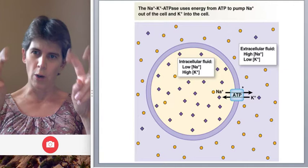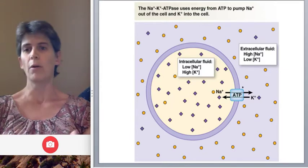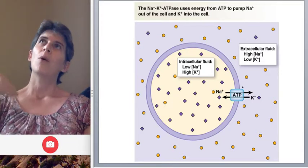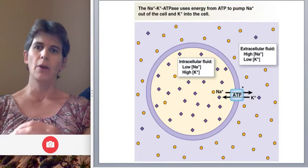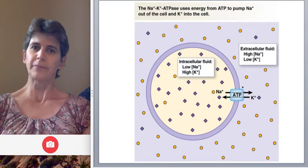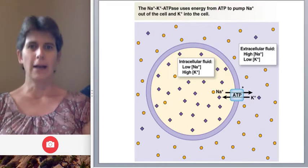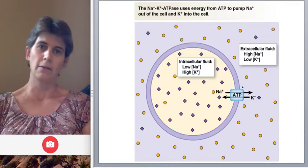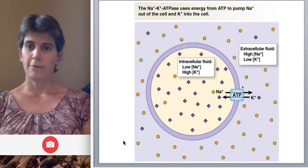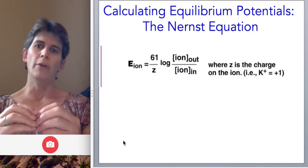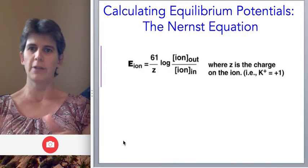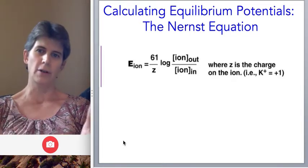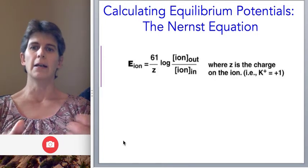That is, what voltage will there be when sodium comes to equilibrium? We can't figure this out just by thinking — we need to do it quantitatively, and luckily this has been done for us. We know the variables we need and how to put them together. This is the Nernst equation. What it tells us is what the voltage across the membrane will be when that ion comes to equilibrium.